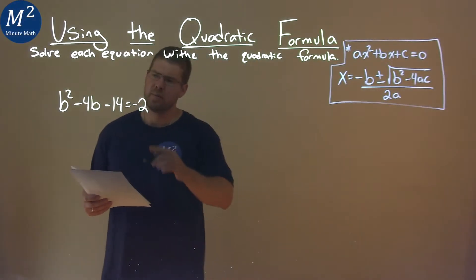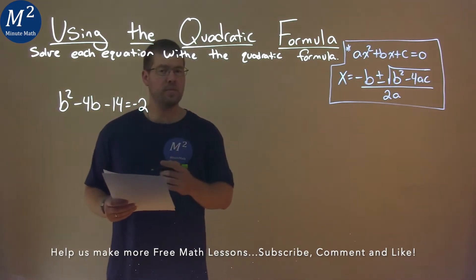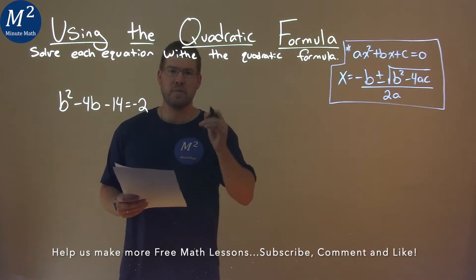We're given this problem right here: b squared minus 4b minus 14 equals negative 2, and we need to solve this using the quadratic formula.